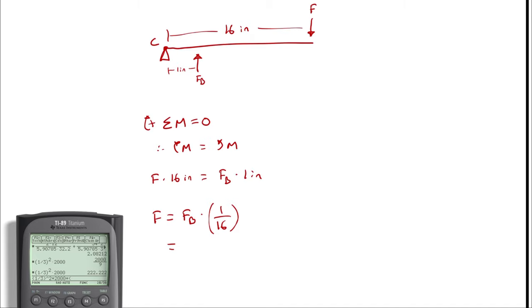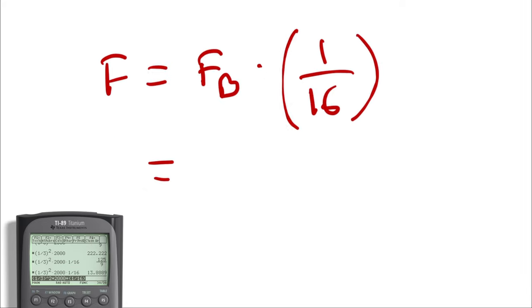So times 1 over 16 yields 125 divided by 9, which equals 13.889 pounds of force.